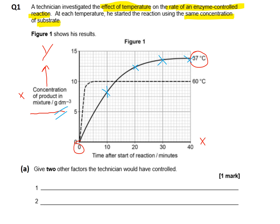A second experiment was then conducted using 60°C. The same control variables were applied — five tubes each with the same volume and concentration of substrate, with the same concentration of enzyme added to each tube, equilibrated to 60°C prior to adding the enzyme. The concentration of product was measured at 10, 20, 30, and 40 minutes, and the data was plotted.